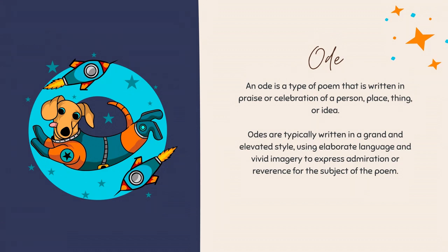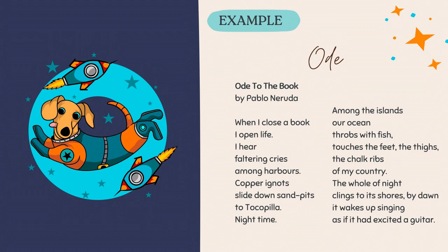Next we have the ode. An ode is a poem that's written in praise or celebration of a person, place, thing, or idea. Odes are typically written in grand language, but their main purpose is to express admiration or reverence for the subject they're covering. The main thing with an ode is there's an object, thing, or person that is being praised. What you're going to get with an ode is a feel for what the subject sounds like, what it tastes like, or what it feels like — it's a very involved poem with the senses. That's what you're really trying to push: those sense details onto the person who's reading your poem.